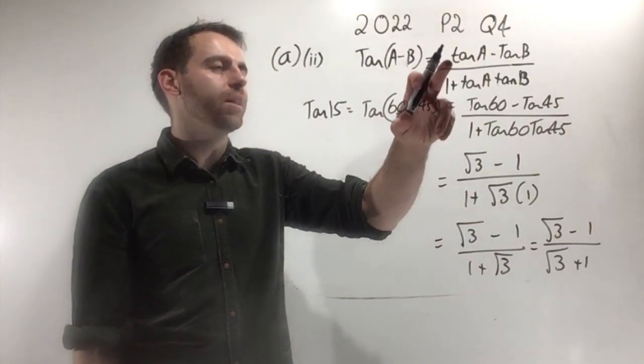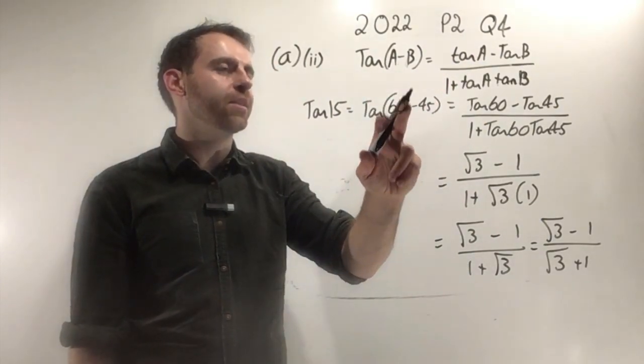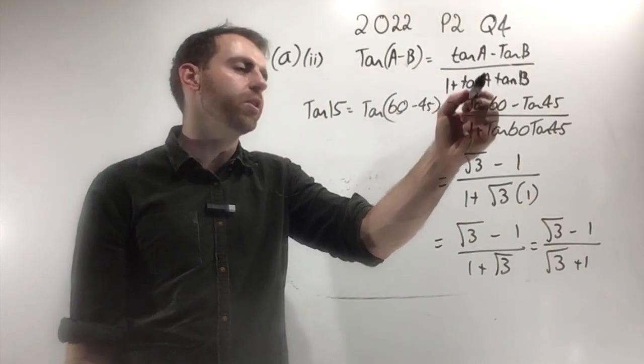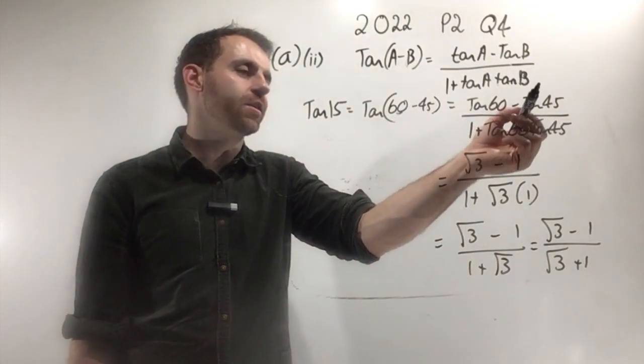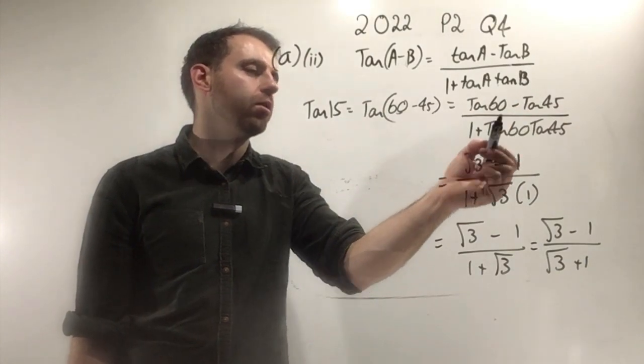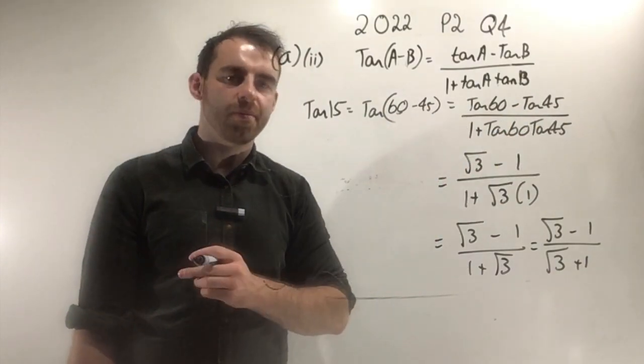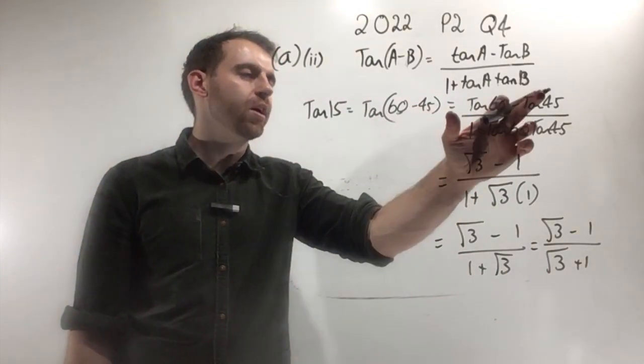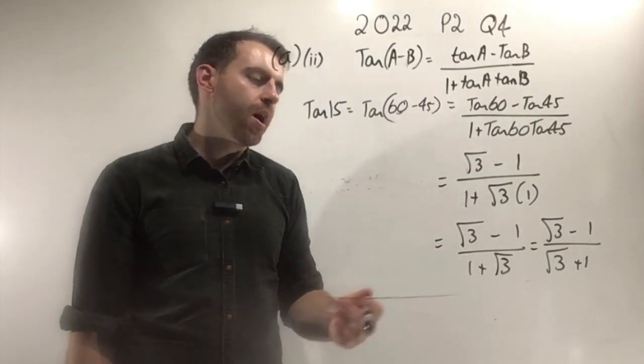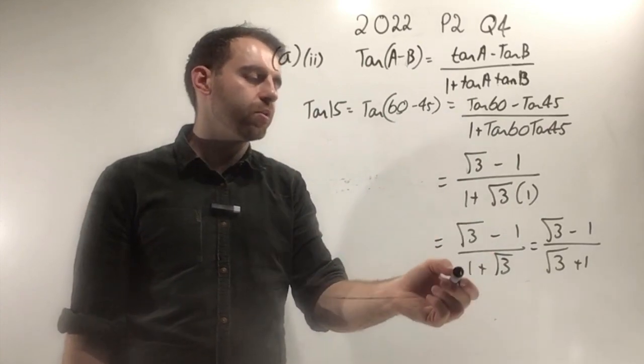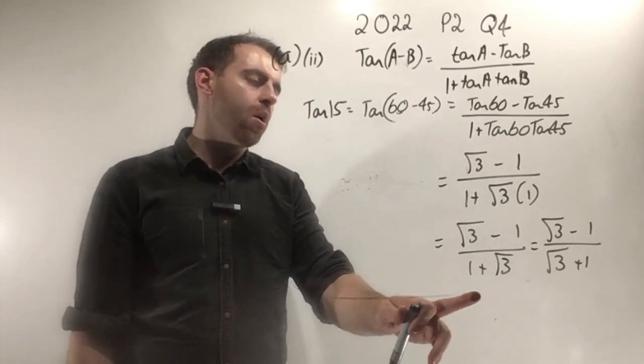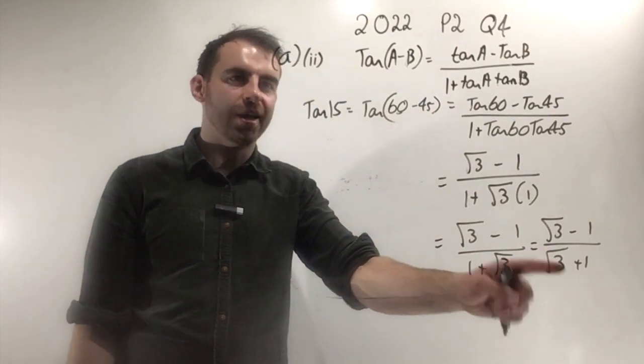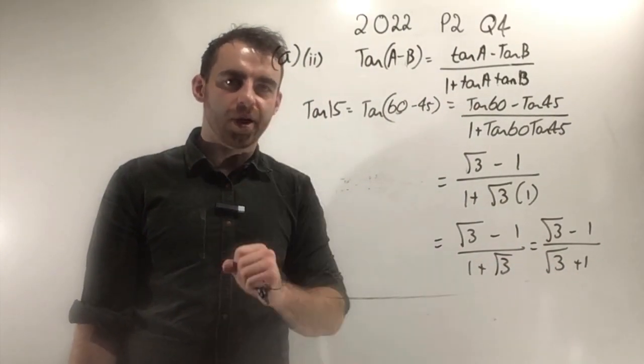So tan 15 is the same as tan 60 minus 45. I'm just subbing into this. My A is 60 and my B is 45. From the formula we just proved, you sub in tan 60 minus tan 45 over 1 plus tan 60 tan 45. From your maths tables, you'll get tan 60 as root 3 and tan 45 as 1. You simply end up with root 3 minus 1 over 1 plus root 3, written in the exact format asked for in the question.